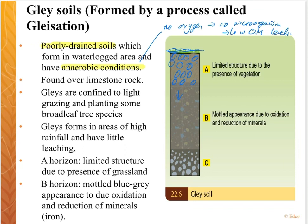Gleyed soils are found over a limestone rock, similar to your brown earth soils that are also found over limestone rock. They are also confined to grazing and broadleaf tree species — generally confined to grazing, in examples such as set stocking, or used for forestry.